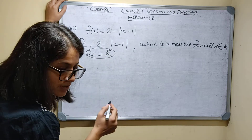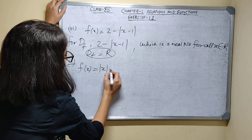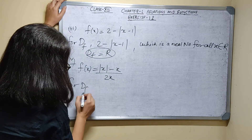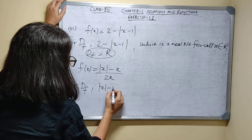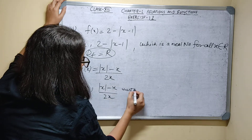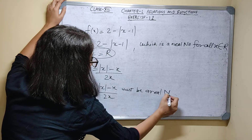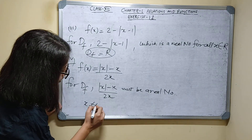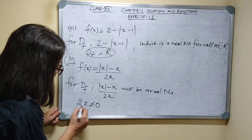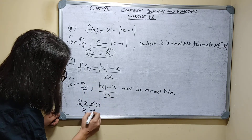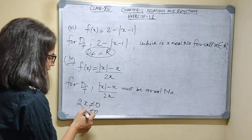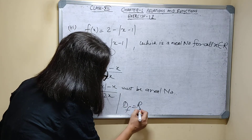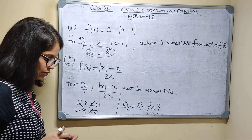Fourth part: f(x) is equal to mod of x minus x upon 2x. For finding domain, mod of x minus x upon 2x must be a real number. For all real numbers it will be a real number, only x cannot be equal to 0, because 2x in the denominator cannot equal 0 — so x is not equal to 0. Apart from 0, all real number values are possible. Domain of function is all real numbers excluding 0, i.e., R minus {0}.